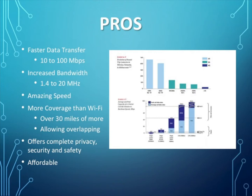Now I'm going to explain the pros and cons of this technology. For the pros, 4G LTE provides very fast data transfer with a speed of 100 megabytes per second. It also has very large bandwidth that ranges from 1.4 to 20 megahertz in frequency. It covers over 30 miles more than Wi-Fi, allows overlapping so you will never see a dead zone, and to top it all off, it is extremely affordable.